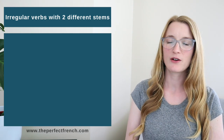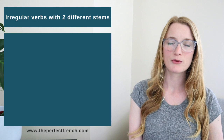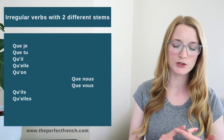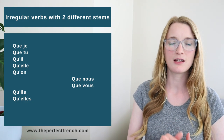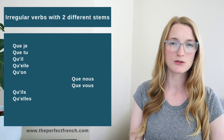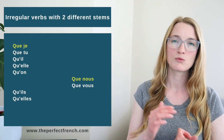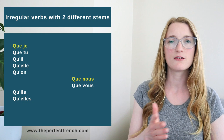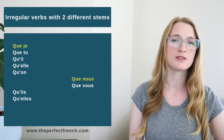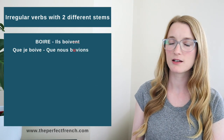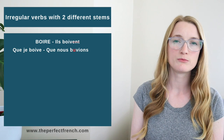We also have irregular verbs with two different stems. The first stem is going to be used for je, tu, il, elle, on, and ils/elles. The second stem is going to be used for nous and vous. I recommend you study one of each — study je and study nous; you don't need to study the whole thing. For example, boire: que je boive, que nous buvions. Devoir: que je doive, que nous devions.